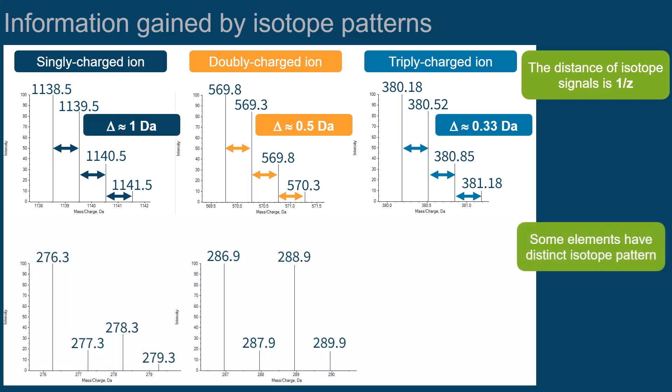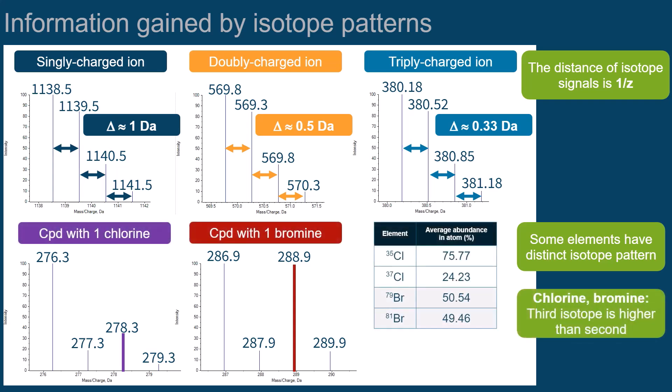Since some elements have a distinct isotope pattern, you can also conclude what the elemental composition of an analyte is. For example, if you see that the third isotope is higher than the second one, the compound contains chlorine or bromine.